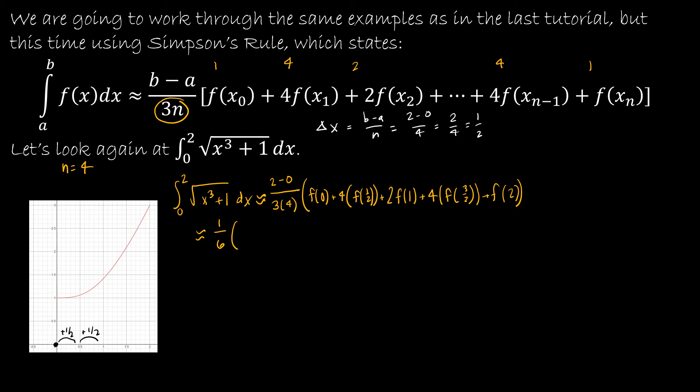Then we have f of 0. In terms of showing work, you want to show me that you know math. So f of 0 means 0 cubed plus 1 and the square root of 1 is 1. Then 4 times f of 1 half: 1 half to the third is 1 eighth plus 1 is 9 eighths. It's okay to just write the square root of 9 eighths because that's a more exact answer.